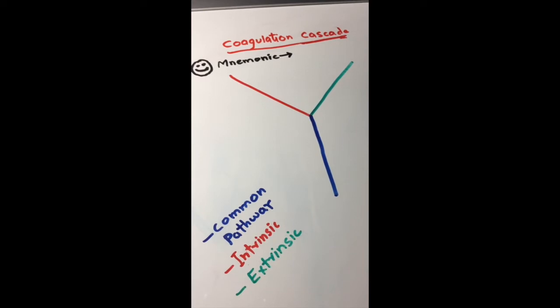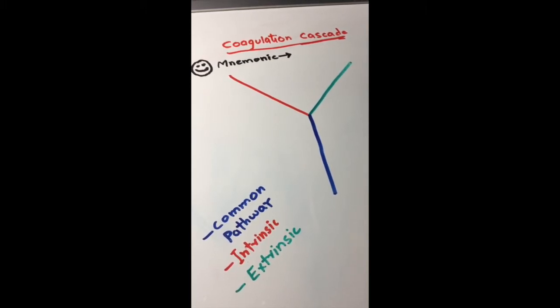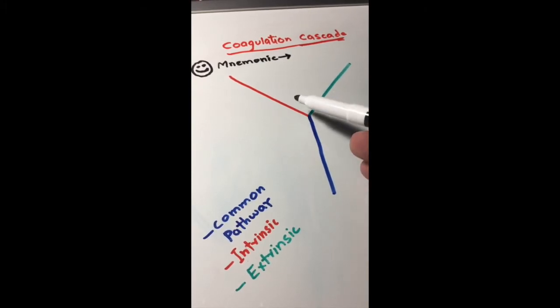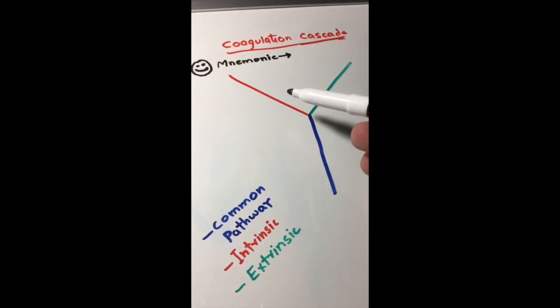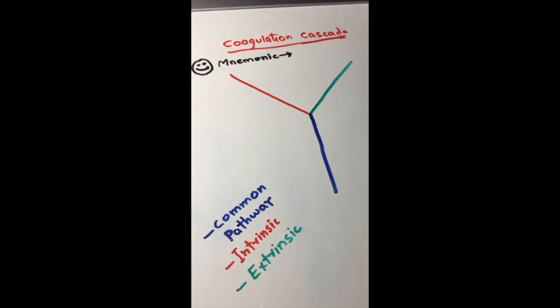I used a mnemonic for it. I hope you guys will understand after watching this simplified video. It has two pathways: extrinsic and intrinsic, and one common pathway. The red line indicates the intrinsic pathway, green is for extrinsic pathway, and the blue line is for common pathway.